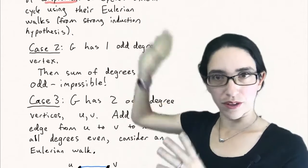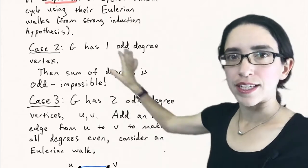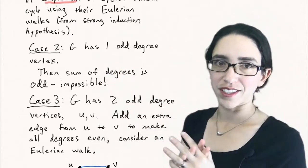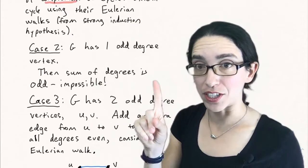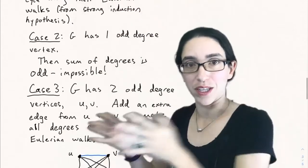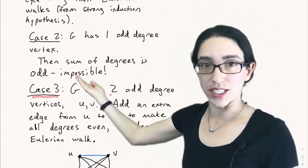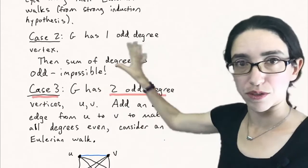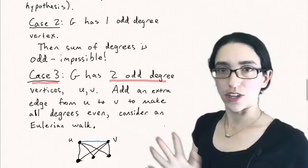So now we know it's true for when you have zero odd degree vertices. Now say it has one odd degree vertex. Well, if it only has one vertex of odd degree and the rest even, then the sum is odd. An odd plus a bunch of even numbers is still odd. And that's impossible because the sum of degrees is supposed to be even. So we don't have to worry about case two. There are no such graphs.